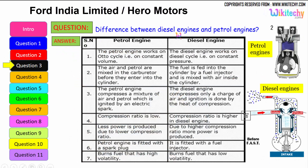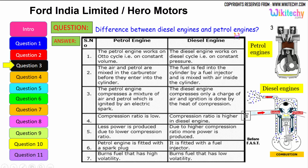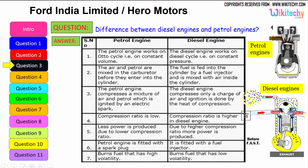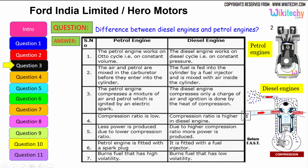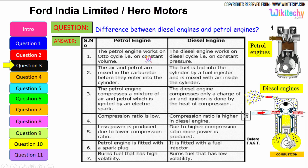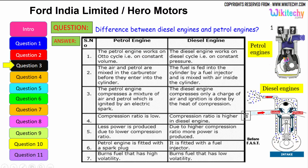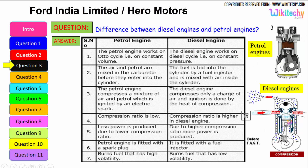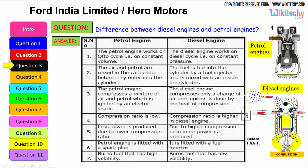Let us see the difference between the diesel engine and the petrol engine. The petrol engine works on the Otto cycle, therefore on constant volume, whereas the diesel engine works on the diesel cycle on constant pressure.